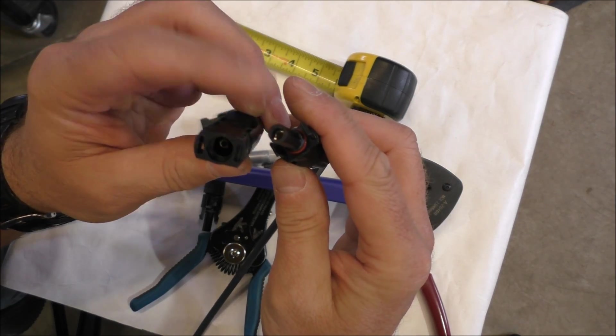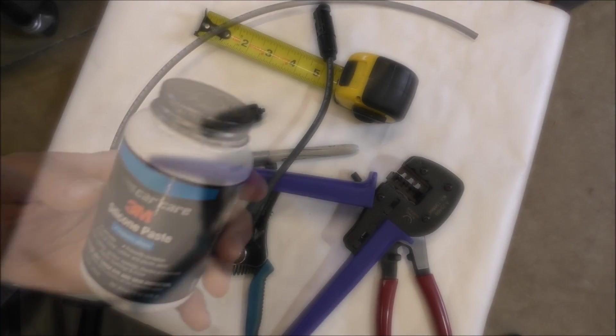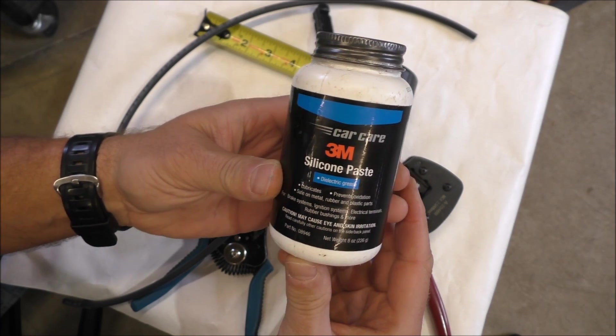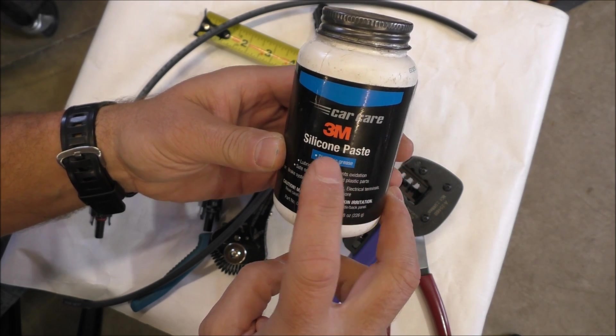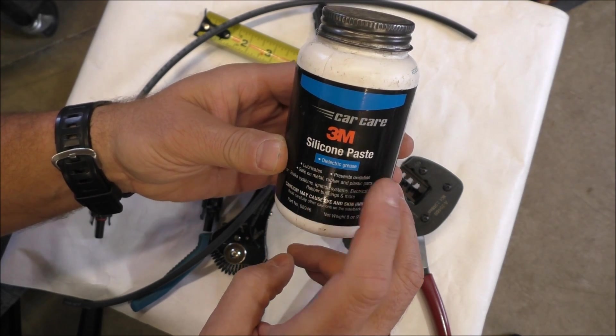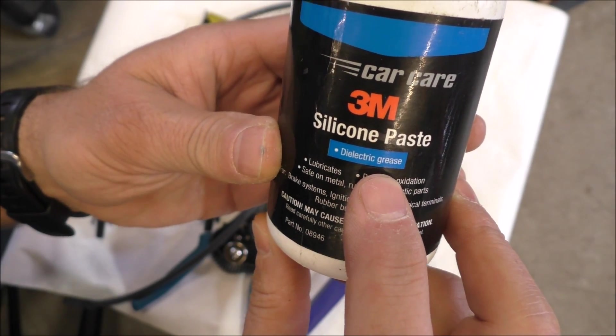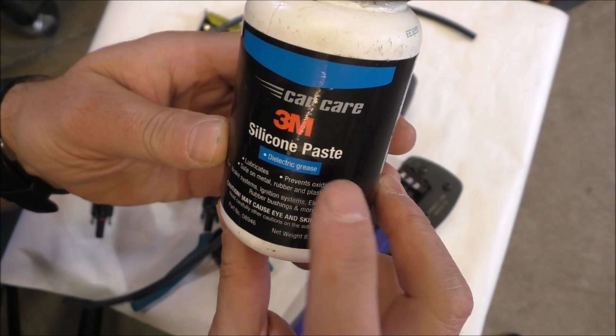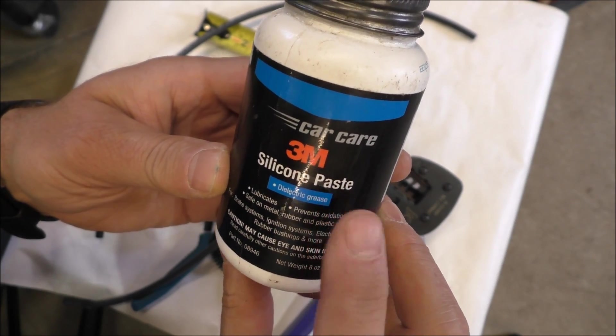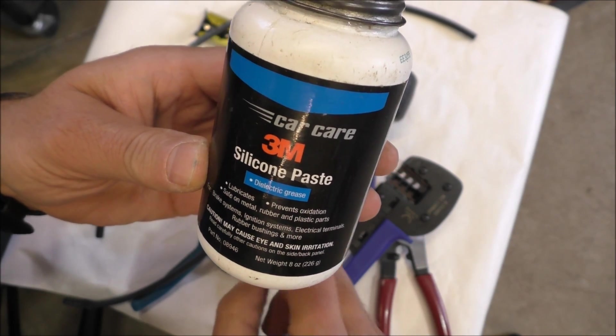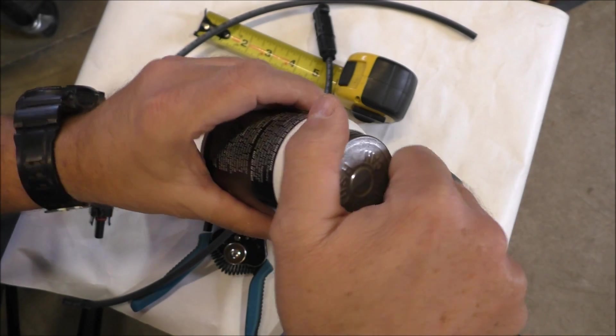But I like to put dielectric grease - I'll show you what I mean by dielectric grease. Here you go. This is 3M silicone paste, car care, silicon paste or dielectric grease. See that? If you're around water, any kind of corrosion - you need battery terminals, I don't care what it is - PV MC4 connectors need dielectric grease. That is the best stuff in the world.